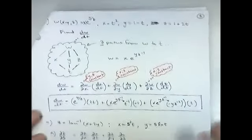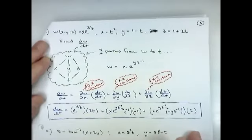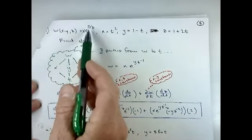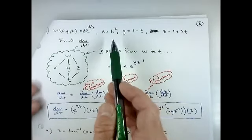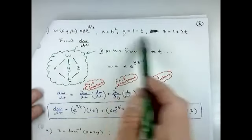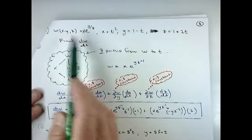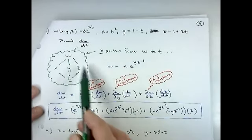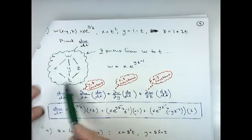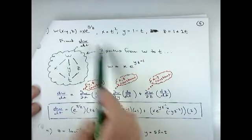More practice. This works for as many variables as you have. Here's some function w that's a function of x, y, and z: x · e^(y/z). Again, we have x, y, and z each defined as functions of time, and we want to find the derivative of w with respect to t. The mapping is going to have more pathways — now three pathways. To help with the derivative, I'll rewrite y/z as y · z^(−1).